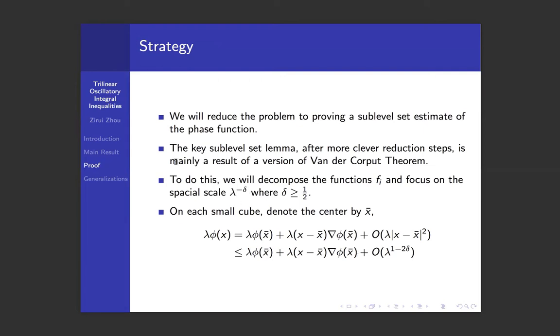Okay, another remark before we dive into the details of the proof is that the strategy of the proof for this theorem goes in some sense reversely to the easier implication. We know that if we have a bound on a particular oscillatory integral that would imply a sub-level set estimate for the phase function. However, here the proof goes in the reverse direction.